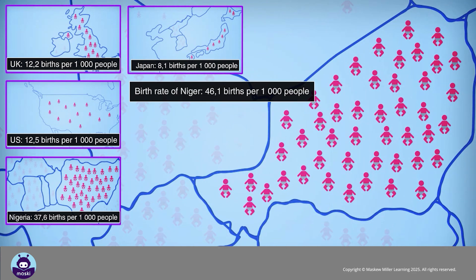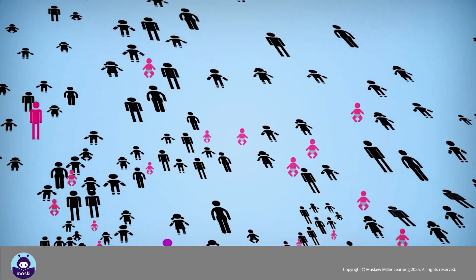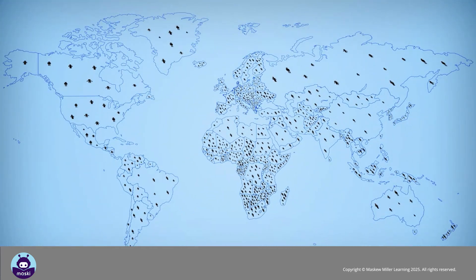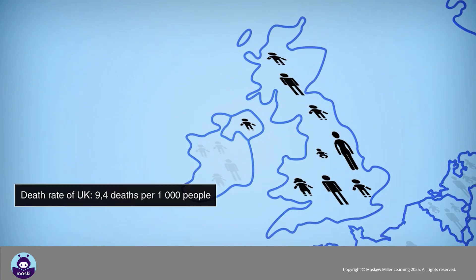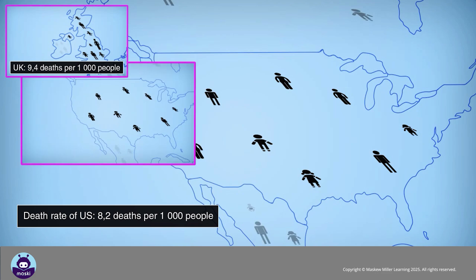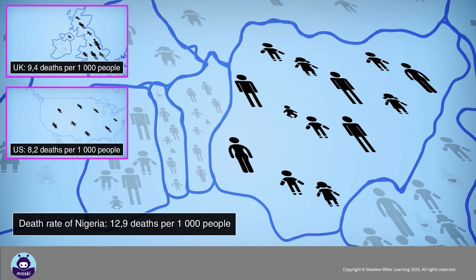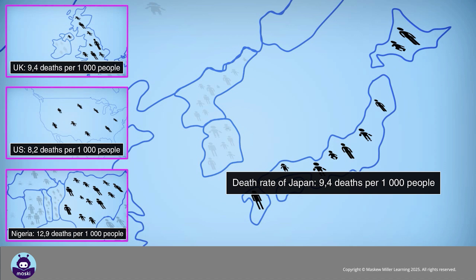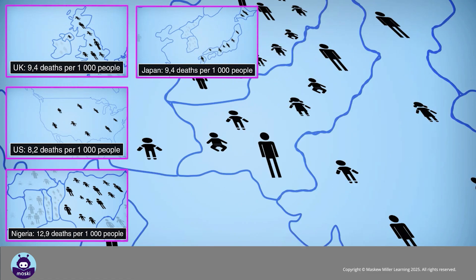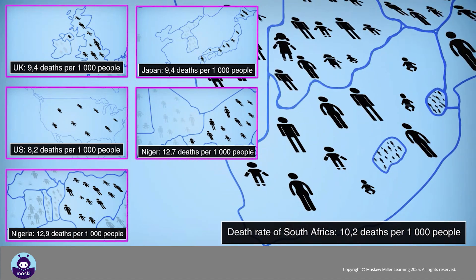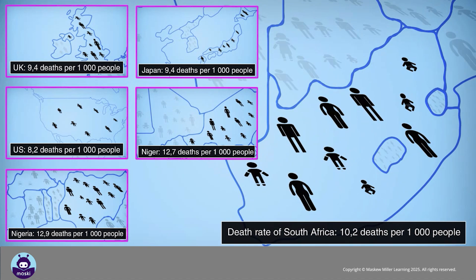The death rate is the number of people who die in a year. It is also expressed as a number per 1,000 people. More developed countries have a lower death rate than countries that are less developed. In 2014, Japan had a death rate of 9.4 deaths per 1,000 people, while Niger's death rate was 12.7 deaths per 1,000 people. South Africa's death rate was 10.2 deaths per 1,000 people.